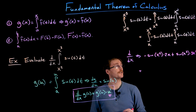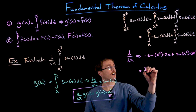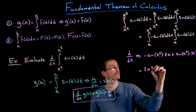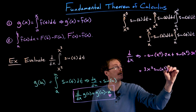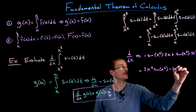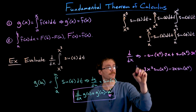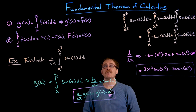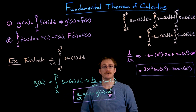So now we can simplify a little bit. I always like to write the positive terms first, so let's re-express this as 3x squared times sine of x cubed minus 2x times sine of x squared. That is how we find the derivative of this integral-defined function using the fundamental theorem of calculus part 1 and the chain rule.